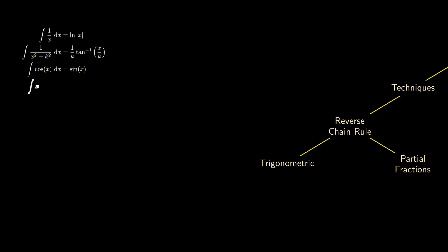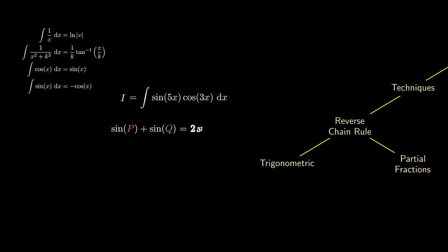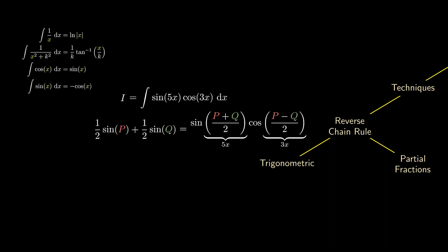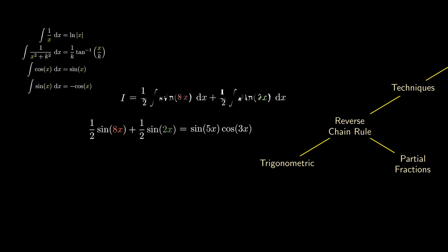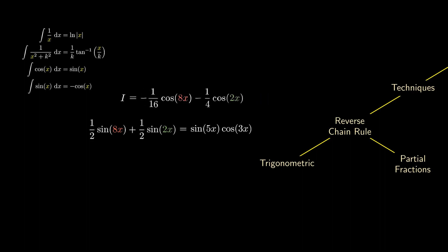But sometimes we need to integrate sine times cosine where the expression inside each trigonometric function is different. The trick is to consider the addition formulae for trigonometric functions. We can divide by 2 on both sides and solve for p and q to be 8x and 2x respectively. Since the right-hand side is sine of 5x times cosine of 3x, we can plug the left-hand side into the integral. Just like before, we need to include the derivatives to apply the reverse chain rule. Since the integral of sine is negative of cosine, we get a combination of cosine terms as our final answer.